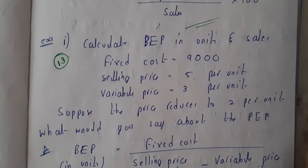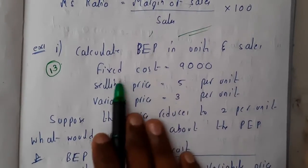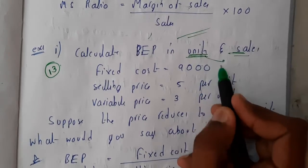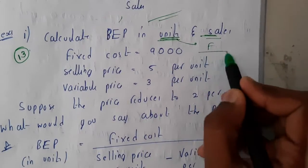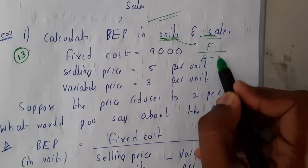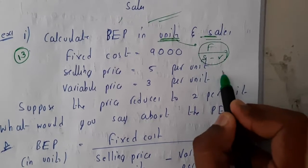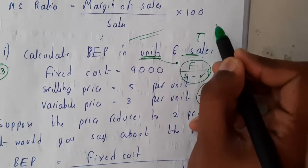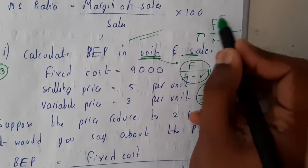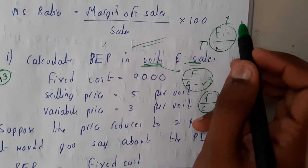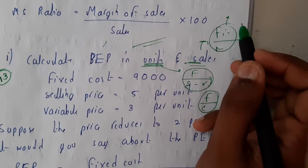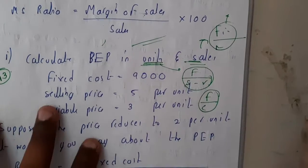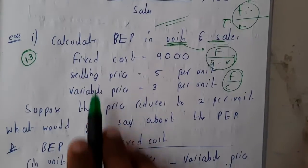The first problem asks us to calculate the BEP in units and in sales. The formula for units is: fixed cost divided by (selling price minus variable cost), or you can write it as fixed cost divided by contribution. Similarly, BEP in sales can be written as fixed cost divided by PV ratio, or fixed cost divided by contribution multiplied into sales divided by sales. You'll be using just one formula — it's really simple.